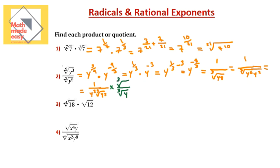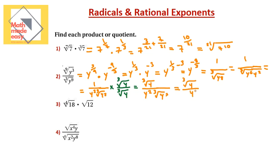When I multiply, the numerator becomes the cubic root of y. In the denominator, y squared multiplied by the cubic root of y cubed gives y squared times y, which is y cubed — wait, the cubic root of y cubed is y. So the denominator is y squared times y, which is y cubed. The final answer is the cubic root of y over y cubed.